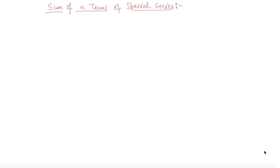So we will solve how to find the sum of these special series. The first series is the sum of n natural numbers: 1 plus 2 plus 3 plus 4 plus 5 up to n. For this series, you will directly use the formula which is sum of n terms, as I have told you in earlier videos, which is n into n plus 1 by 2.